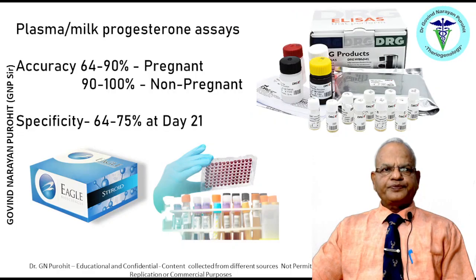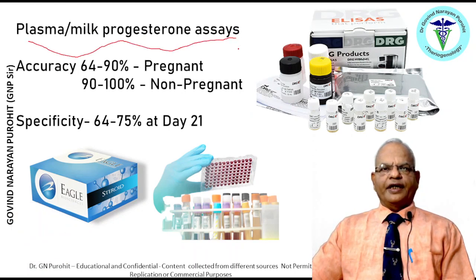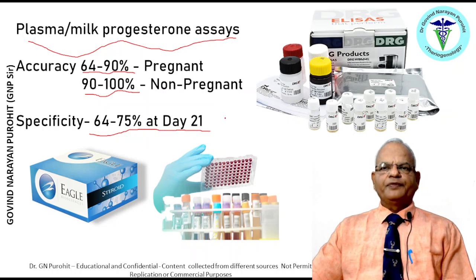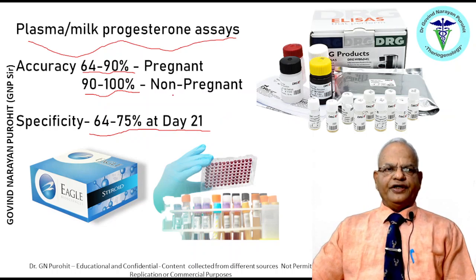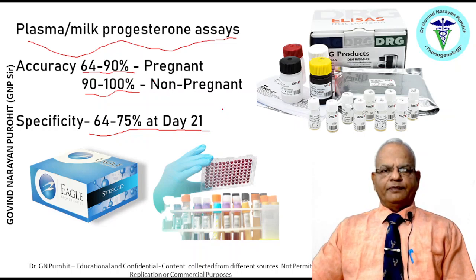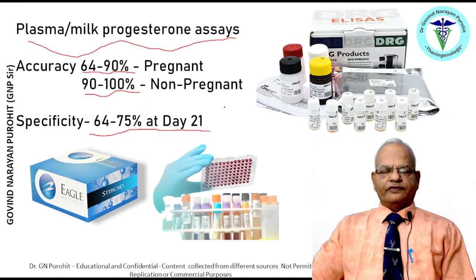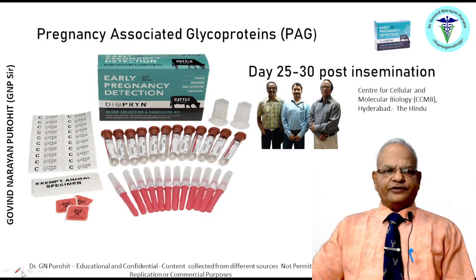Plasma or milk progesterone assays can be used for pregnancy diagnosis in a buffalo herd, but accuracy varies from 64 to 90 percent for pregnant animals and 90 to 100 percent for non-pregnant ones, with specificity of 64 to 75 percent at day 21. Problems include false negatives and false positives, and if the breeding season is over, results may be misleading. The high cost of progesterone assays limits their use to organized farms.